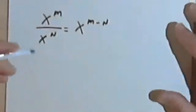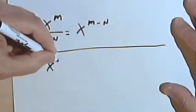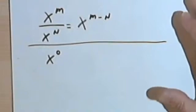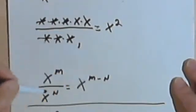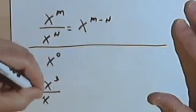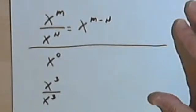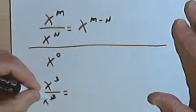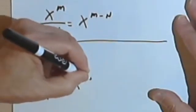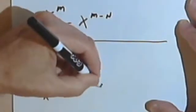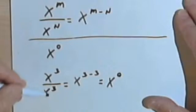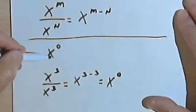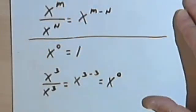Now this is a good time to explain the value of x to the zero. Let's think about how we might get something like x to the zero. Using the division rule, if we had x to the third divided by x to the third, the rule tells us to subtract 3 from 3, giving us x to the third minus 3, which equals x to the zero. But we also know that any number divided by itself equals 1. So when we raise a base to a zero power, we get 1.